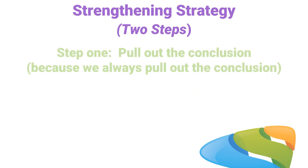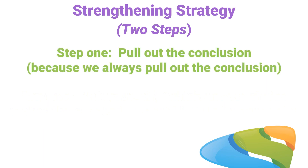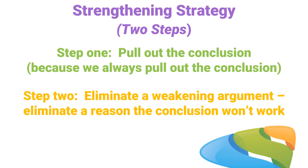As the questions get harder, they'll expect you to know that you can strengthen an argument by eliminating a really strong argument that would have weakened the conclusion. So if you can eliminate a weakening argument, you've actually found a strengthening argument. I know that sounds confusing, but let's take a look at an example and I think you'll see what I mean.